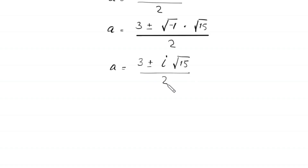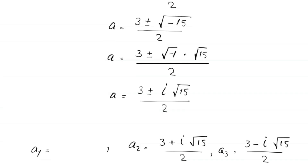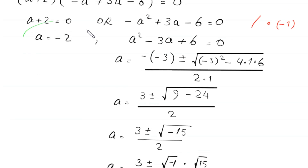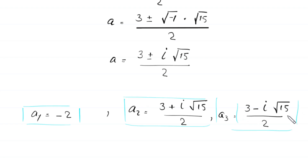Divided by 2. So from here we get two values: a equals (3 plus i times root 15) divided by 2, and a equals (3 minus i times root 15) divided by 2. Combined with the first solution a equals negative 2, we have three solutions to this equation: negative 2, (3 plus i root 15) over 2, and (3 minus i root 15) over 2.